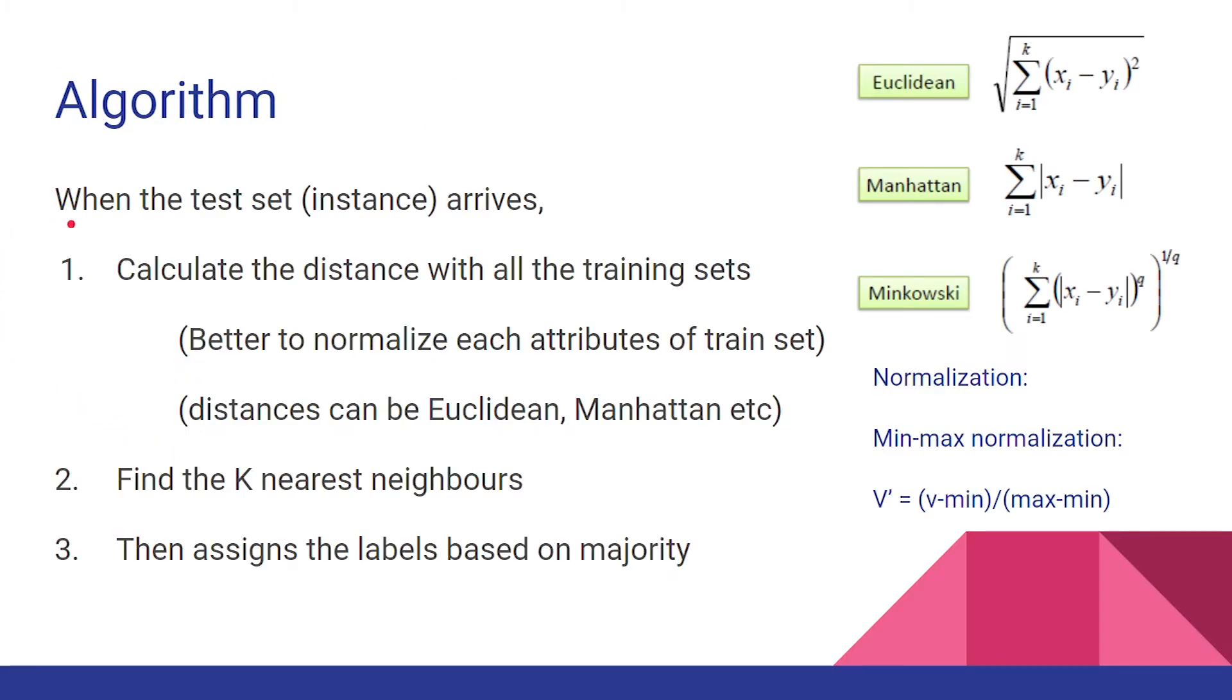KNN is simply a three-step algorithm. When you get a test input, you need to calculate the distance with all the training dataset, then find the K training sets that are closest to the test set. Finally, we assign the label for the test set based on the majority label of K training sets.